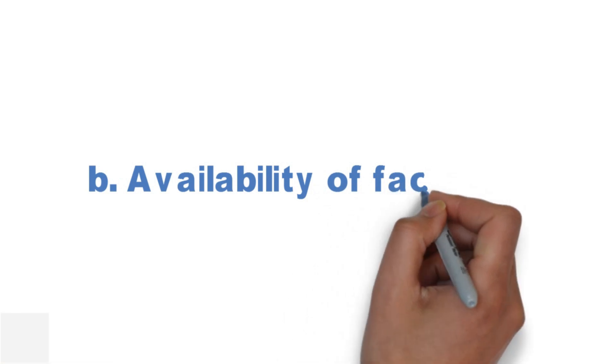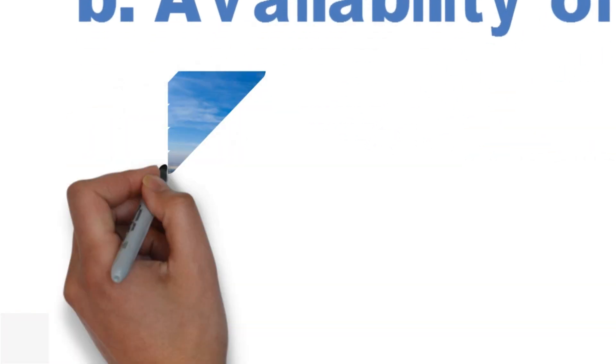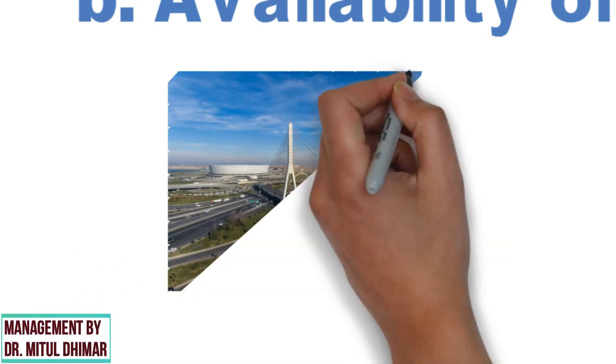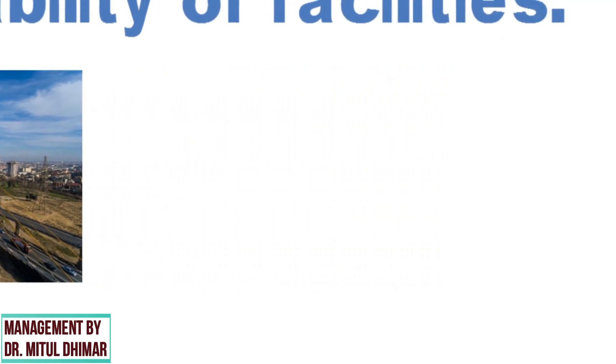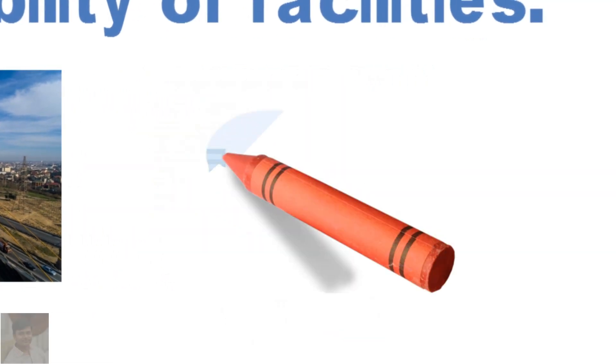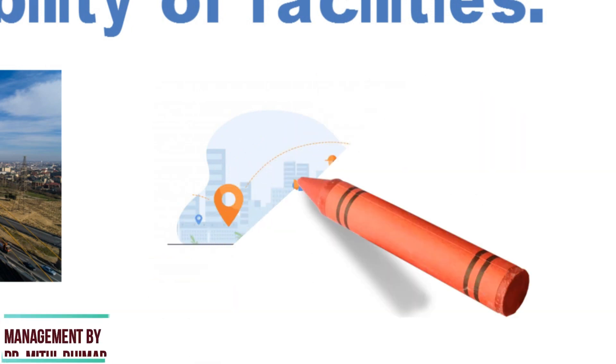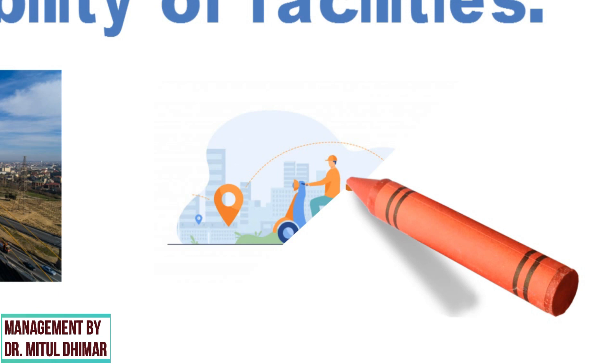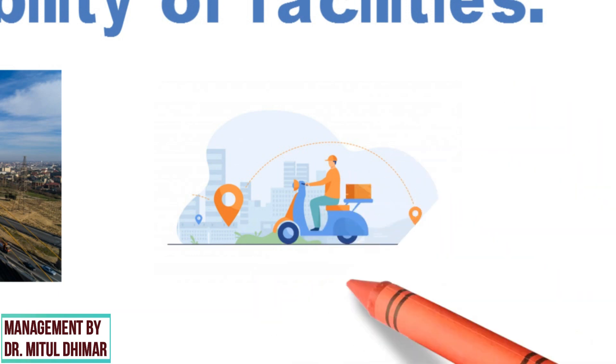Point number two is availability of facilities. Facilities such as transportation, communication, storage, banks, insurance, etc. affect the company's channel decision. For example, with the total length of roads in India over 30 lakh km, India has one of the largest road networks in the world. So because of this, company can select more numbers of channels.